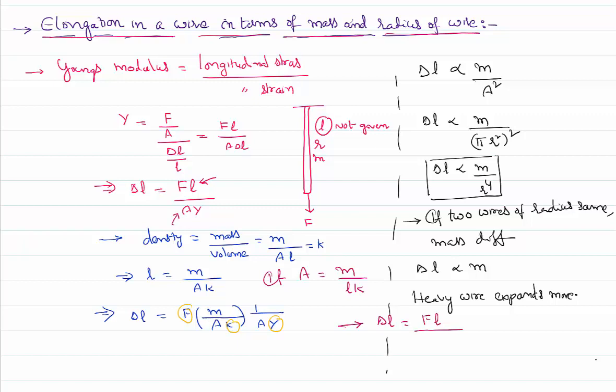In the place of area, m by l k, and of course Y is there. So F l square k by m Y. So force is constant, k is constant, Young's modulus is constant. Then I can write delta l directly proportional to l square by m.